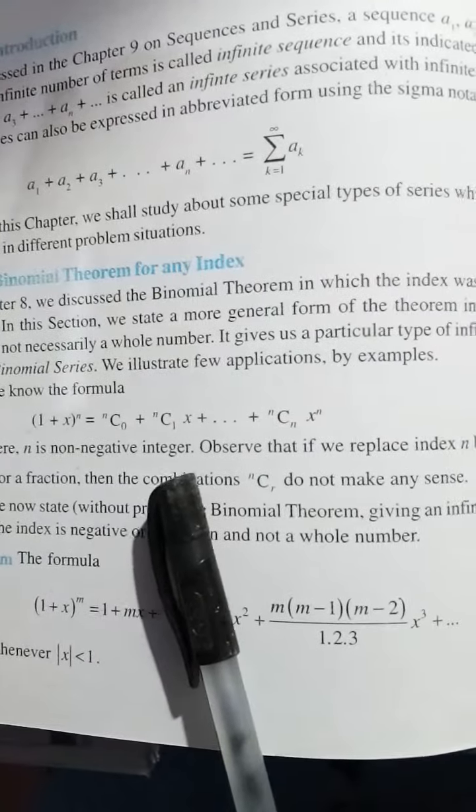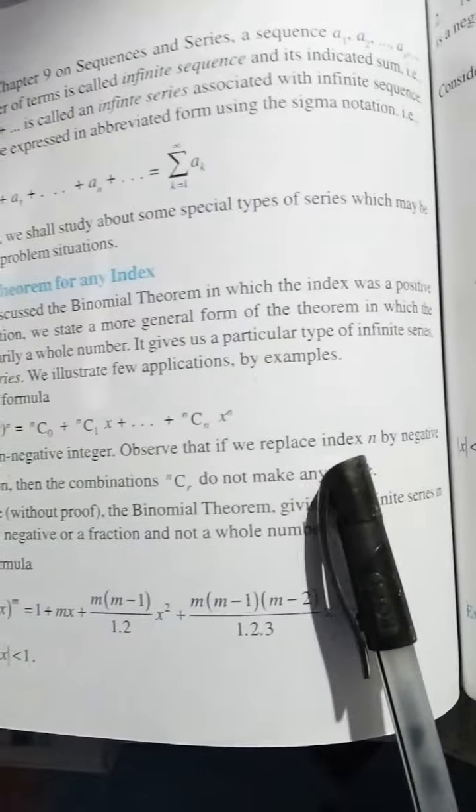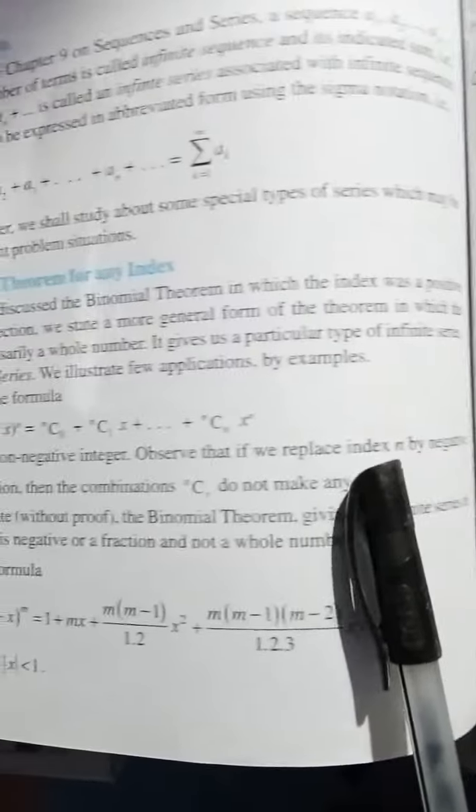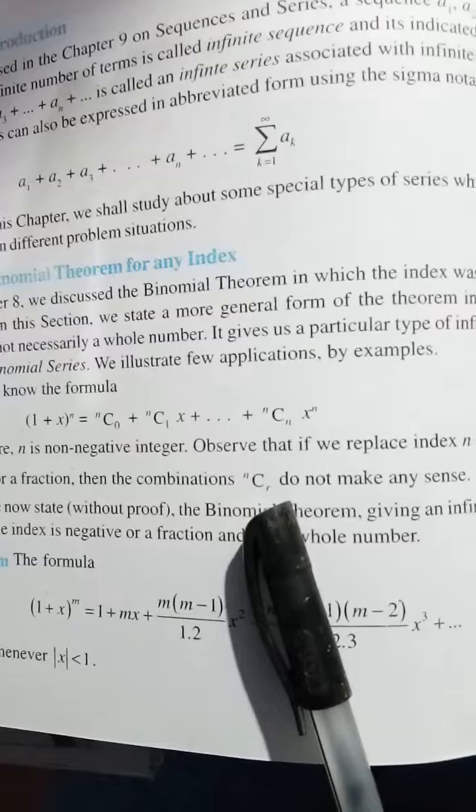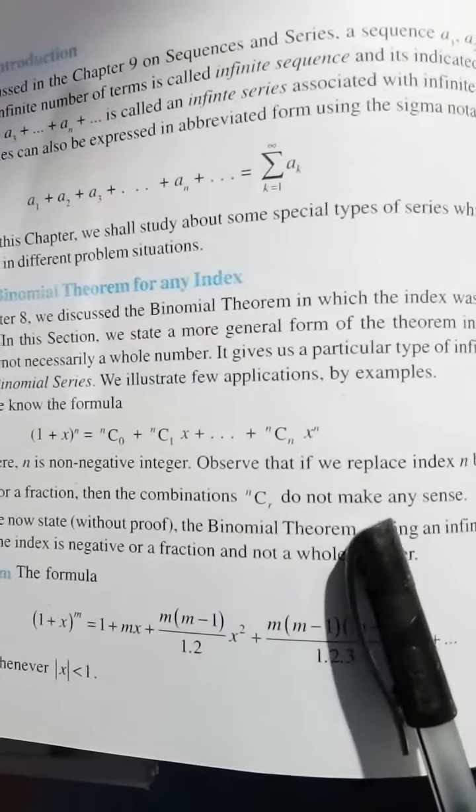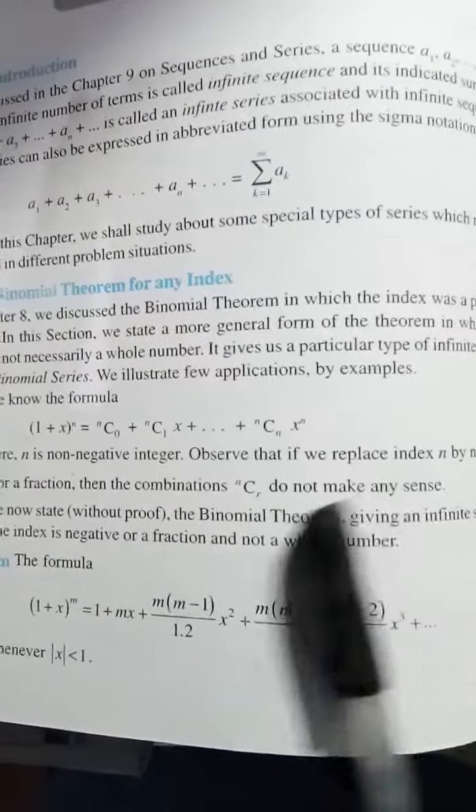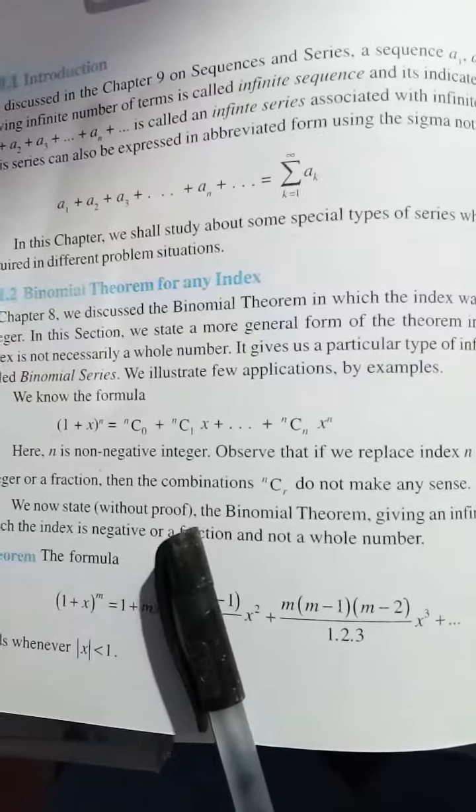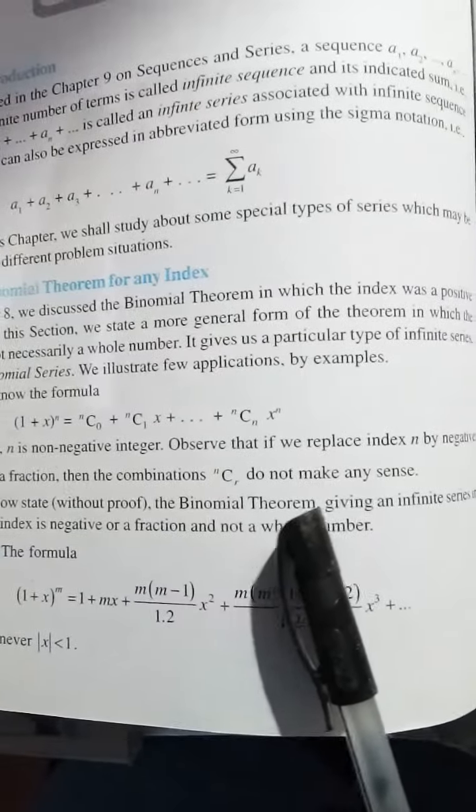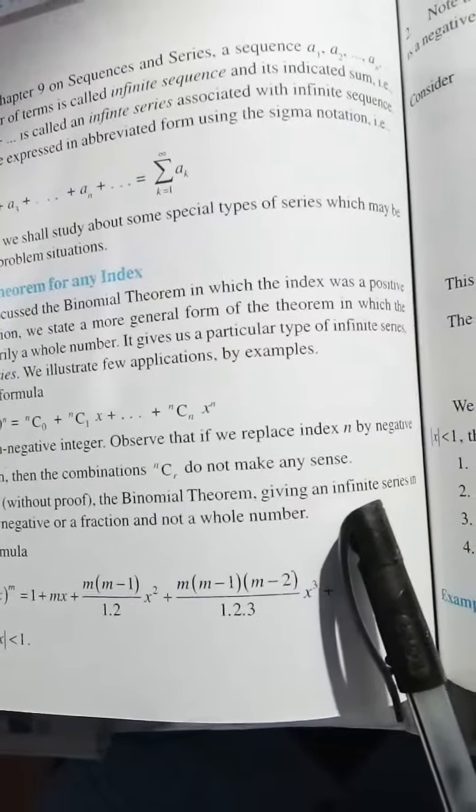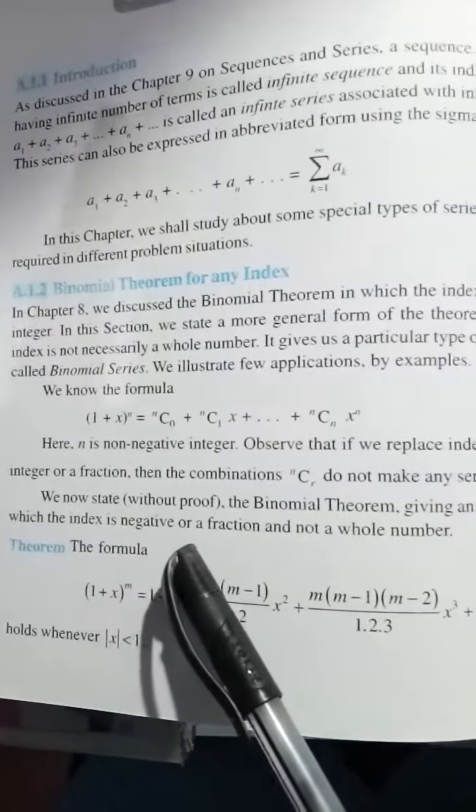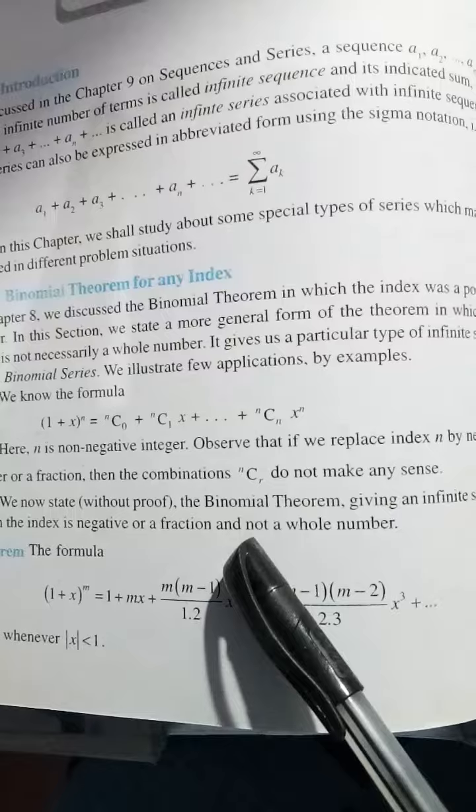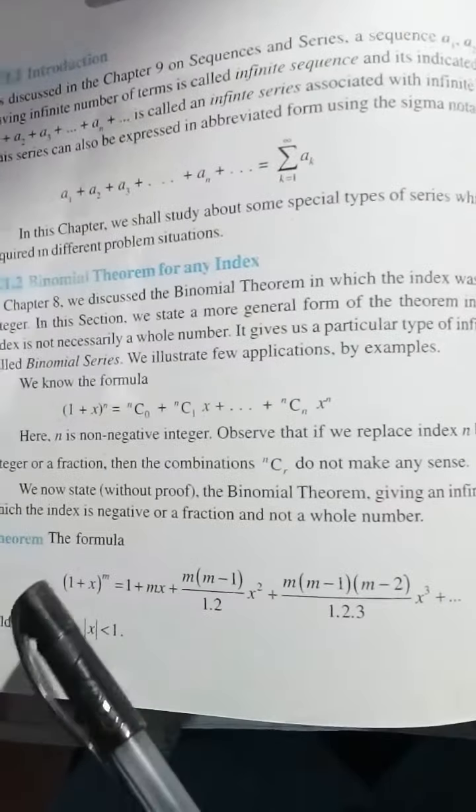Observe that if we replace index n by a negative integer or a fraction, then the combinations nCr do not make any sense. We now state without proof the binomial theorem giving an infinite series in which the index is negative or a fraction and not a whole number.